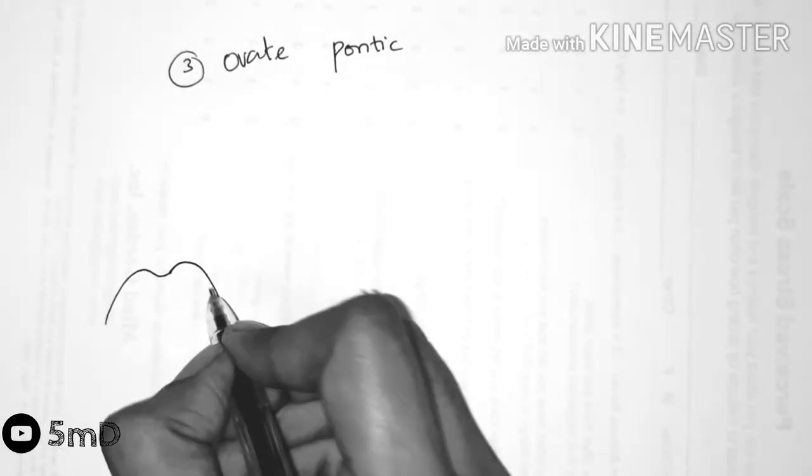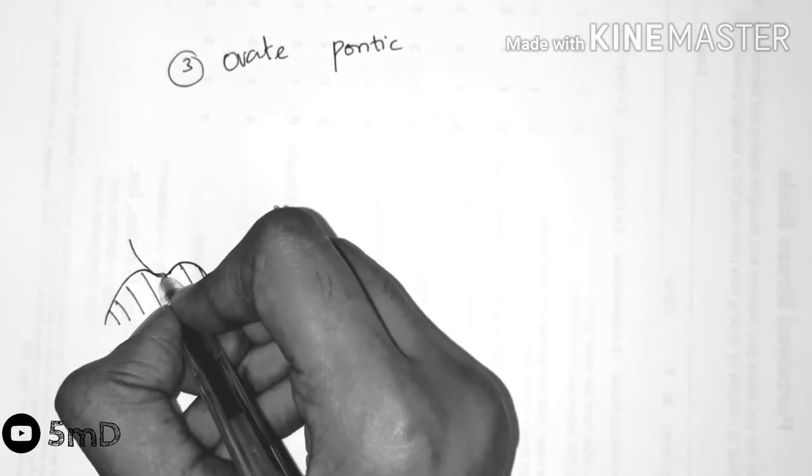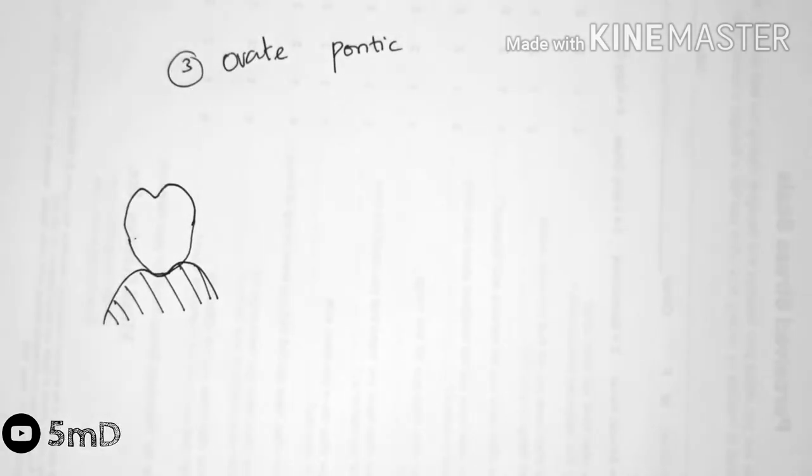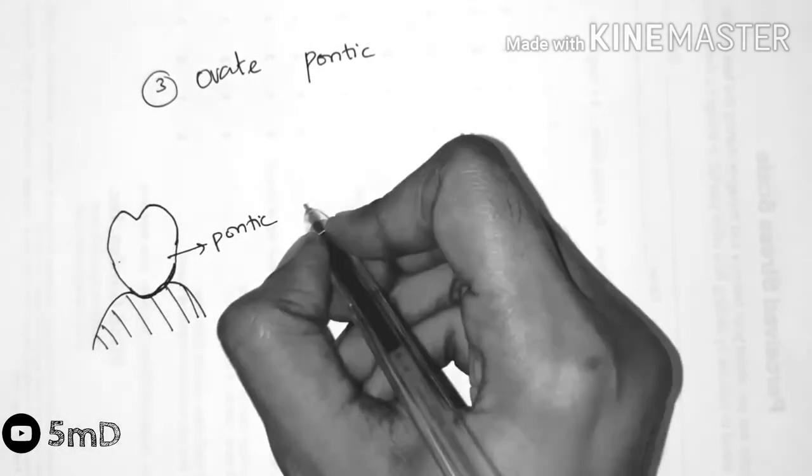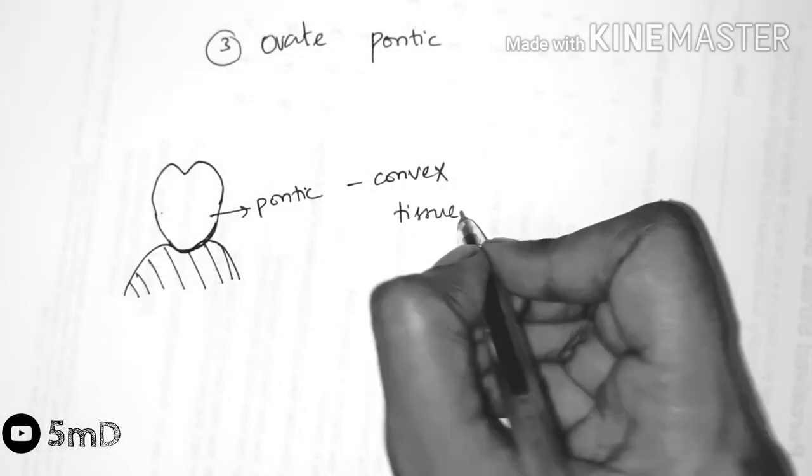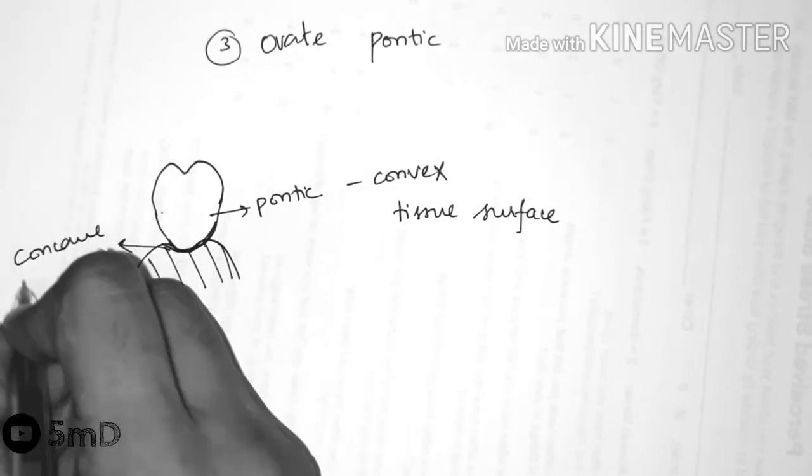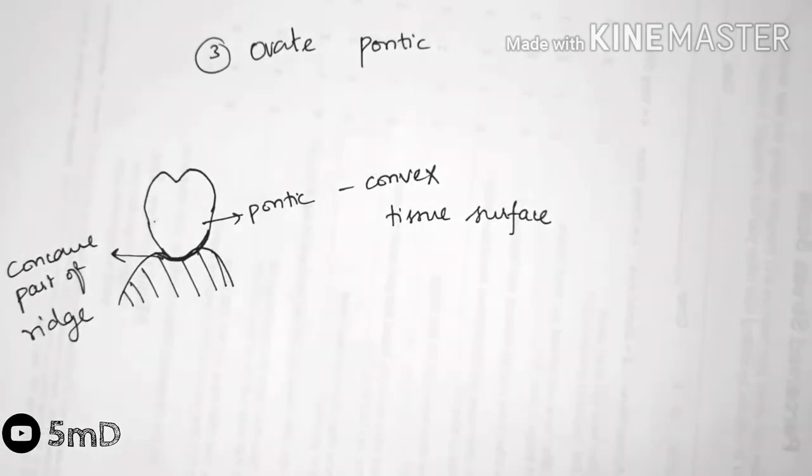Now let us see the next type of pontic, which is the ovate pontic. In this ovate pontic, the tissue surface of the pontic is convex in shape and resides within the concavity in the ridge. The tissue surface is rounded and blunt so that it does not injure the ridge.